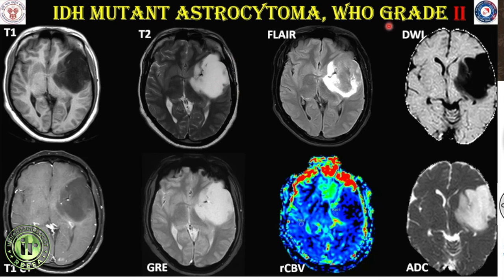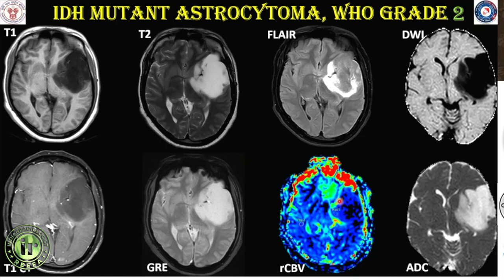This is an IDH mutant astrocytoma, a WHO grade 2 neoplasm. As per the newer classification, grading uses Arabic numerals, not Roman numerals. The tumour is homogeneously hyper-intense on T2, partially suppressed on FLAIR with persistence of peripheral rim, shows no post-contrast enhancement, no blooming on gradient, and is iso- to hypoperfused on RCBV maps without restricted diffusion. Areas of hyperperfusion on RCBV would suggest a higher grade, such as WHO grade 3 IDH mutant astrocytoma.